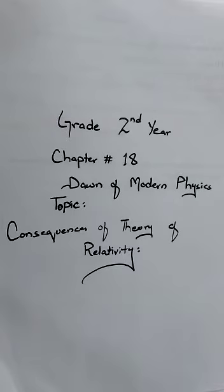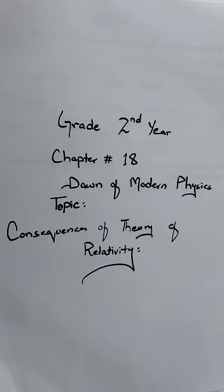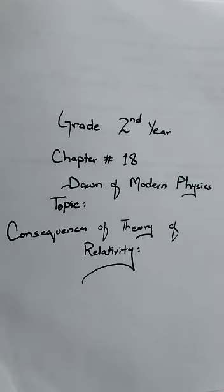Bismillahirrahmanirrahim. Assalamu alaykum students. As you know, we already discussed about the special theory of relativity, along with two results of the special theory of relativity. So in this lecture we are going to discuss about the consequences of the special theory of relativity, meaning the remaining results. We already discussed two results; now we discuss what are the other results.